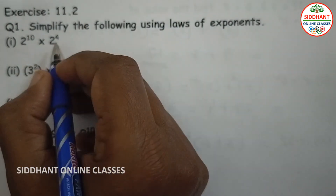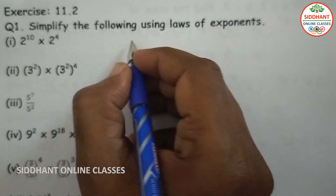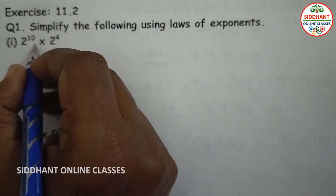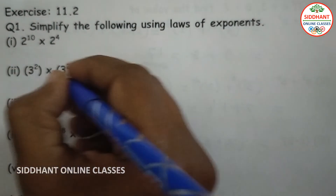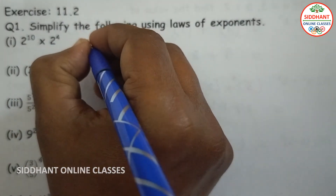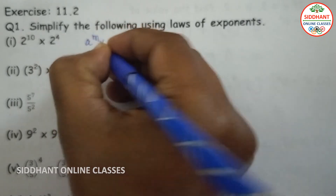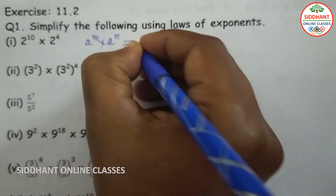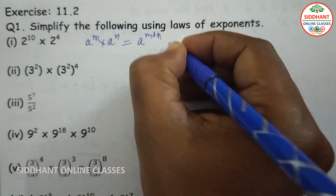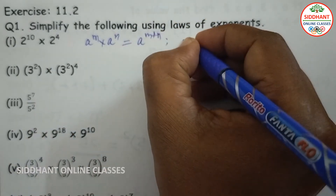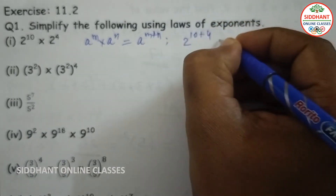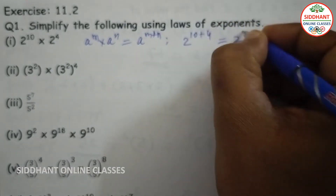Exercise 11.2, question number one: simplify the following using laws of exponents. First one: 2 to the power of 10 plus 2 to the power of 4. We know a to the power of m into a to the power of n equals a to the power of m plus n. So here, 2 to the power of 10 multiplied by 2 to the power of 4 gives 2 to the power of 14.